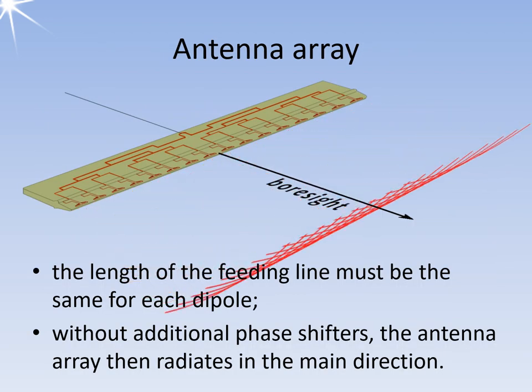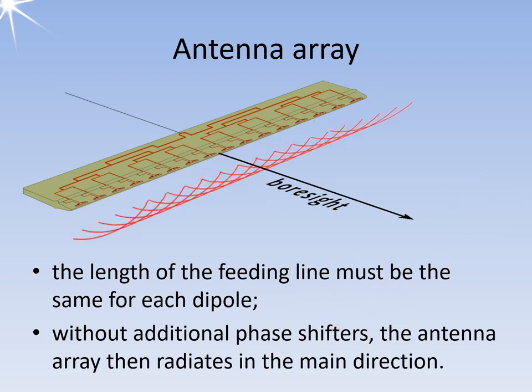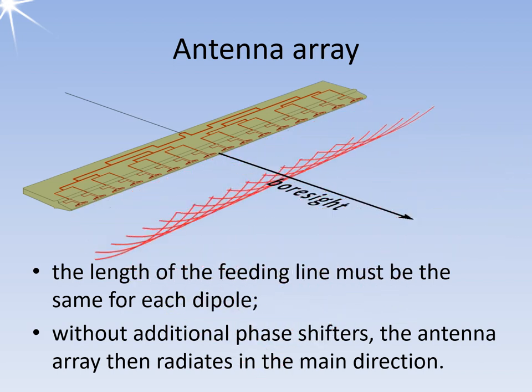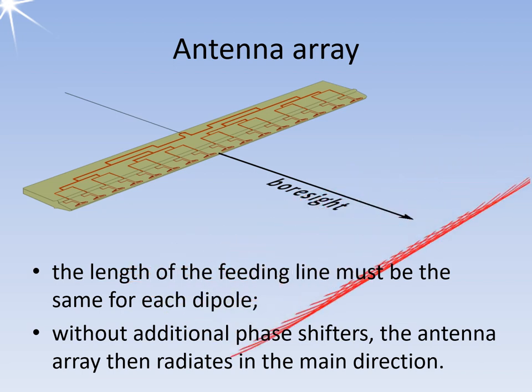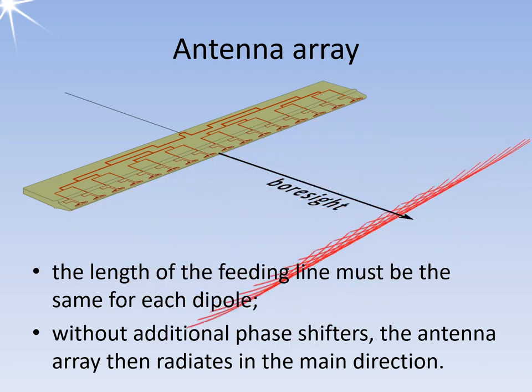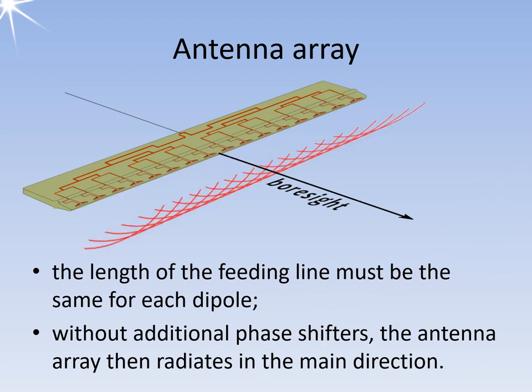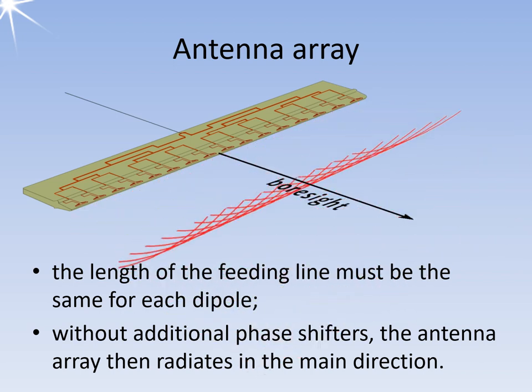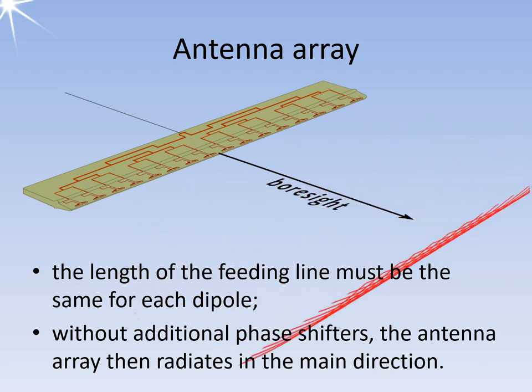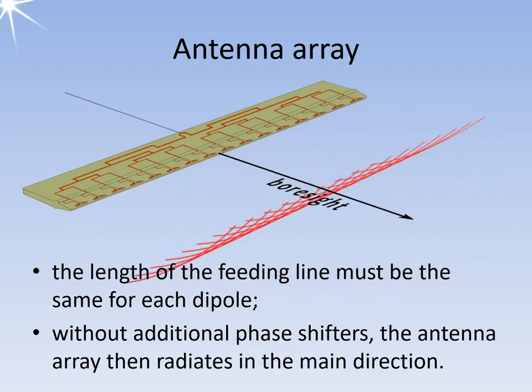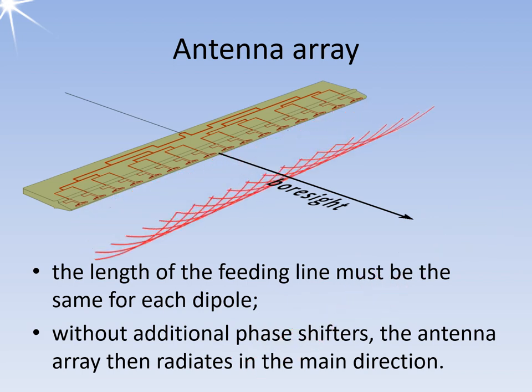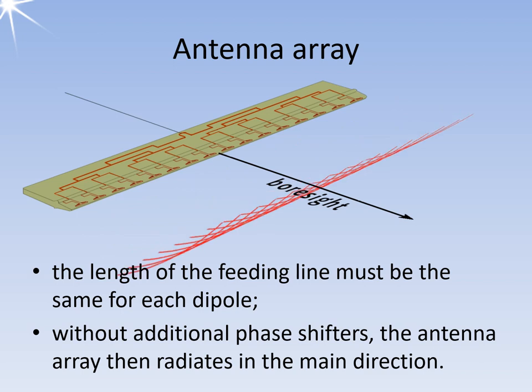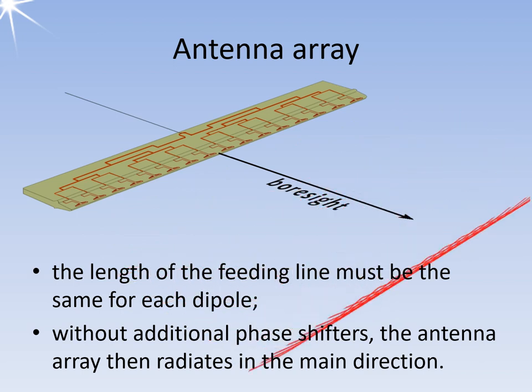Many modern phased array antennas use the same principle as the Mammut radar from the past. If a horizontal antenna array from that time were to be produced with modern technology and higher frequencies, it would look like shown in the picture. However, this array does not have phase control yet. Each radiator emits a spherical wave, which, when fed with in-phase signals, adds up to form a wave front that moves perpendicular to the antenna array's geometric alignment, the so-called boresight.